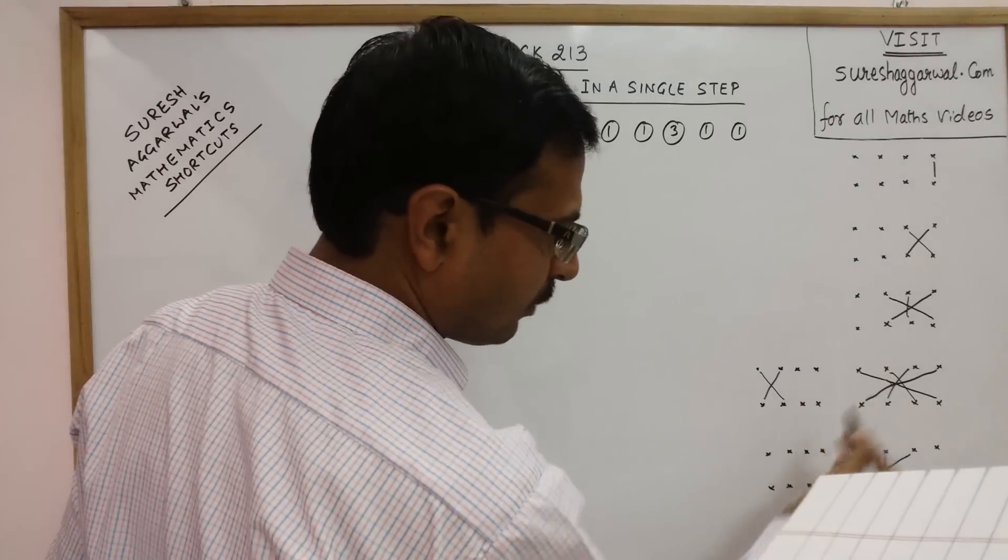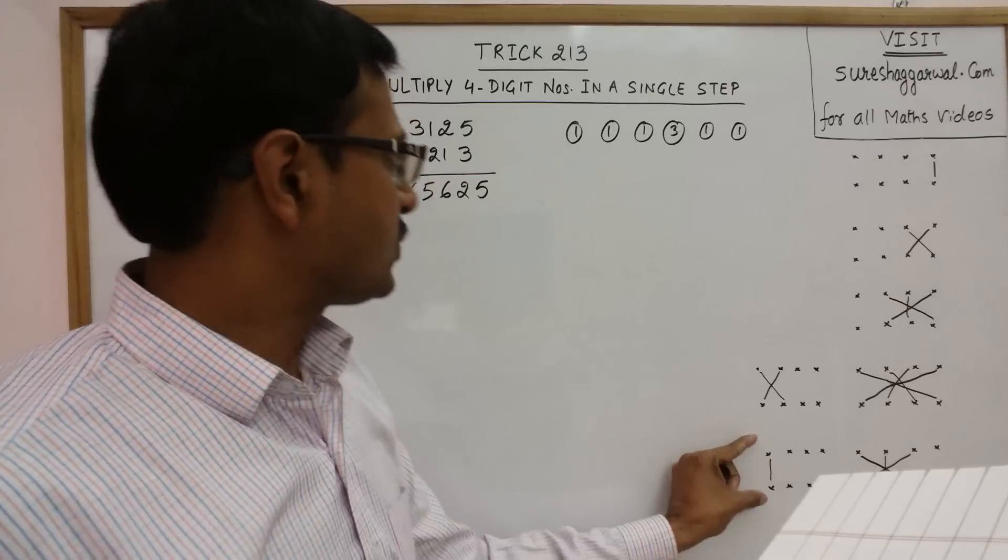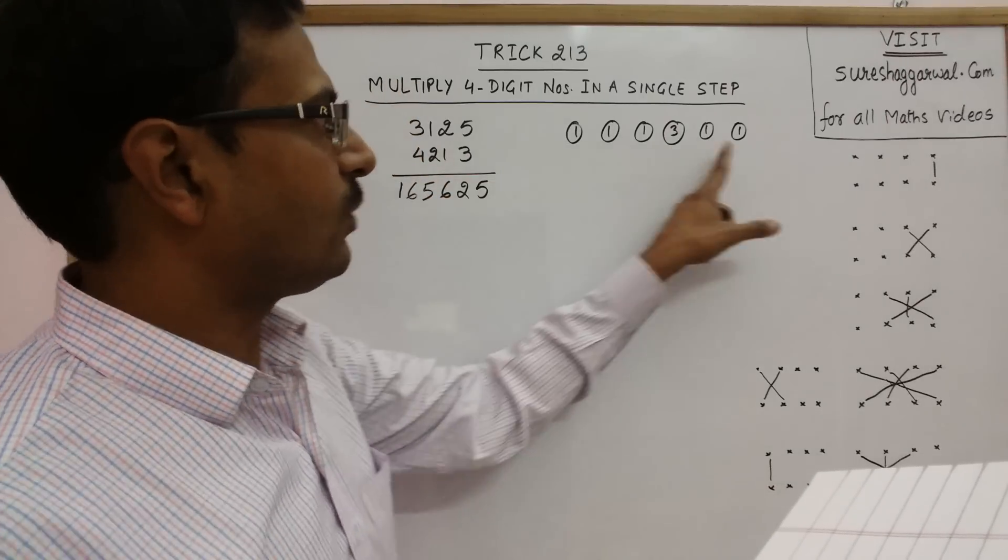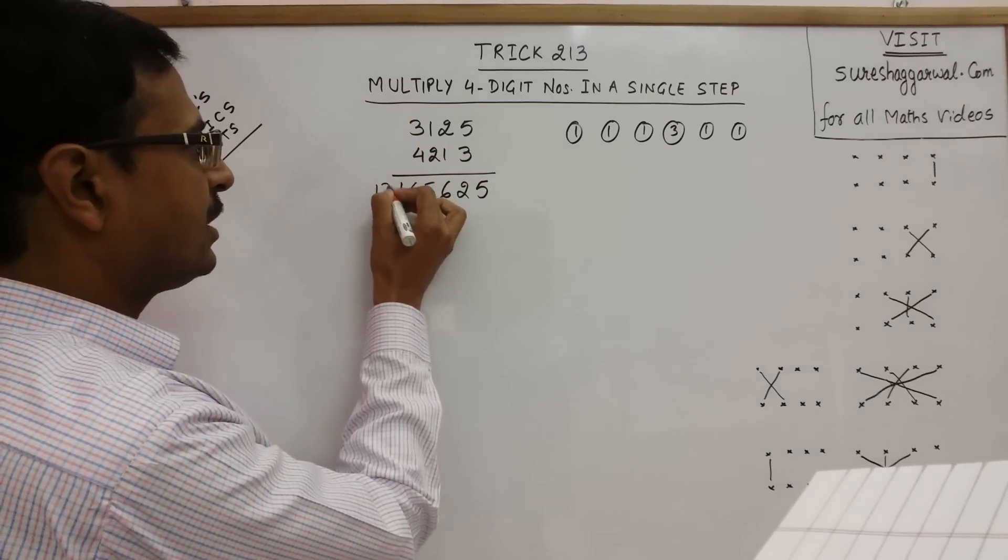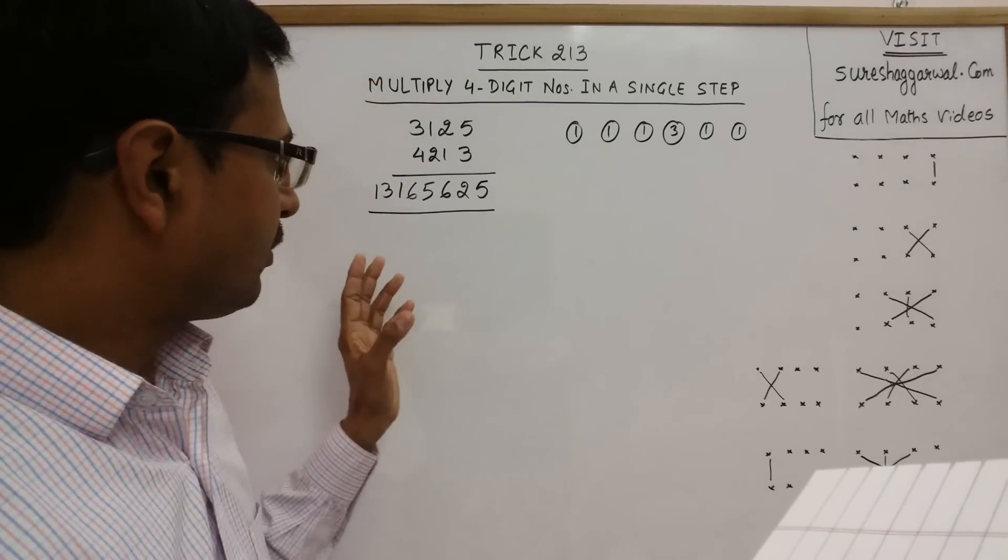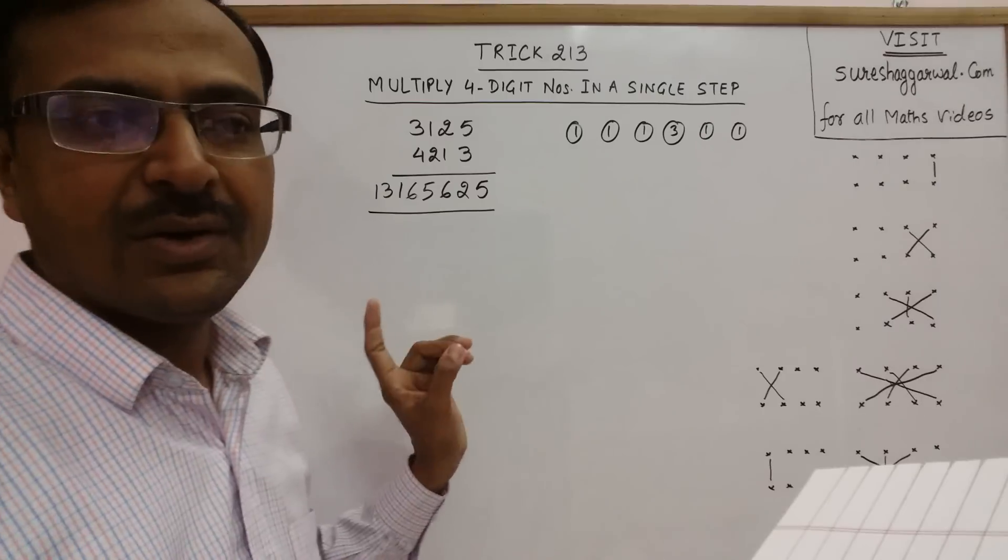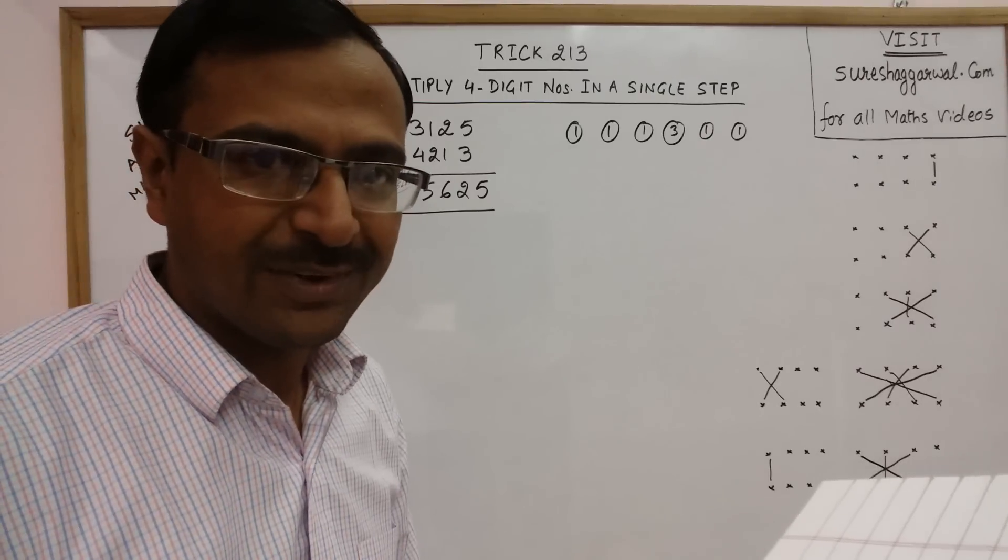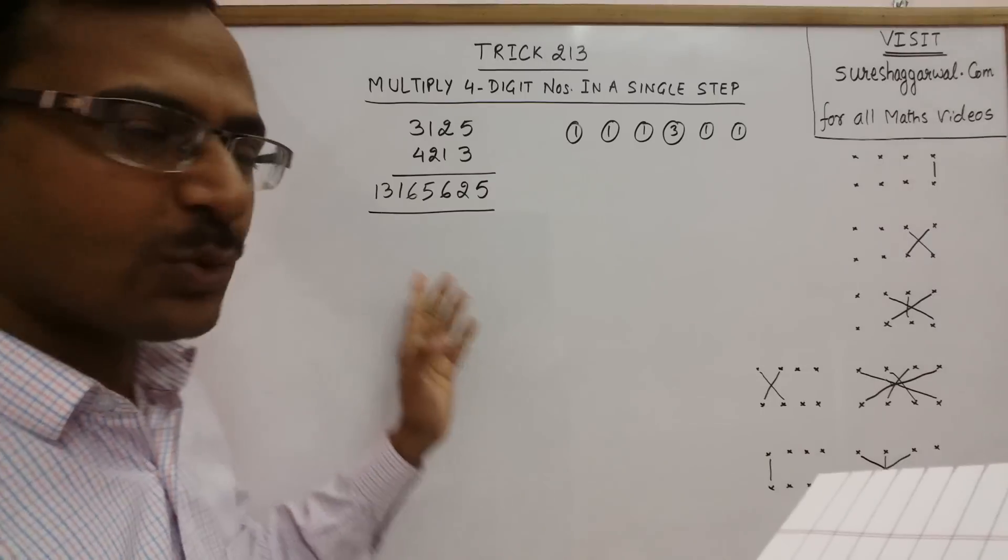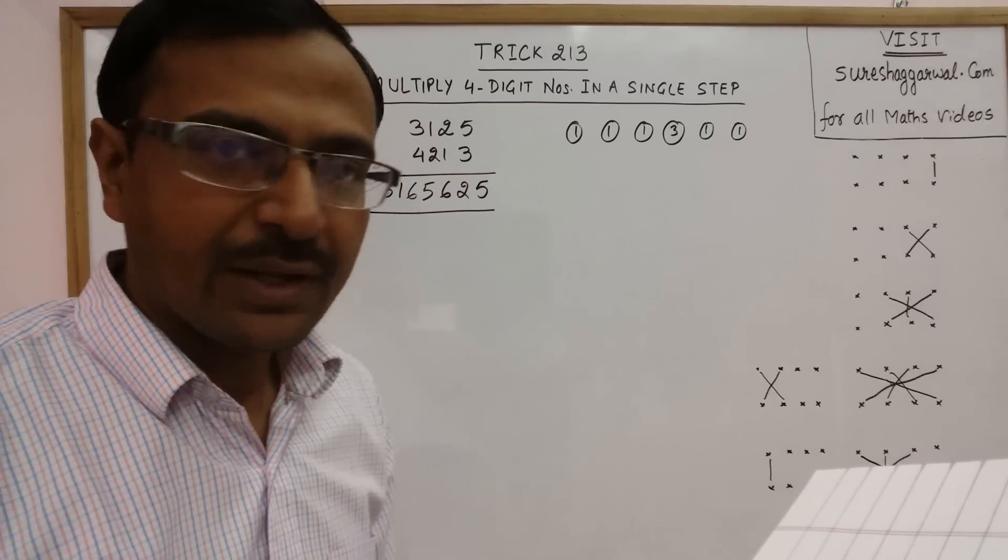And finally, leave 1 more pair. We are left with only the digits in the 1000s place. This is 4th result 12 and 1 carry 13. Our final answer on multiplication of these 2 four-digit numbers in a single step is 13,16,56,25. And if you check it through calculator, this result is as accurate as it can be.